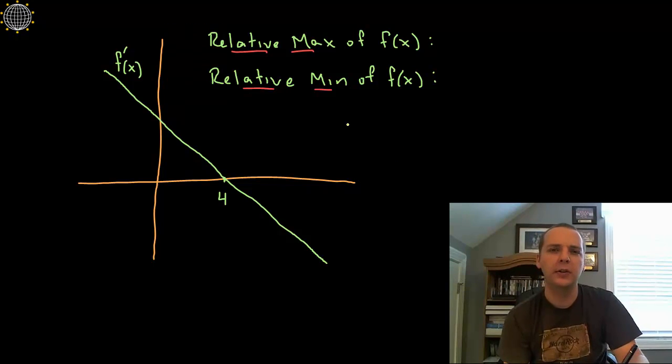Now what were critical values again? Well you recall a critical value was a place where the derivative was either zero or undefined or did not exist. And so let's look on this graph here and see where is the derivative zero or where is the derivative undefined.